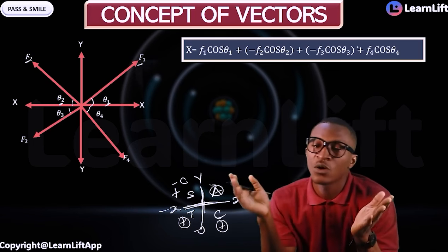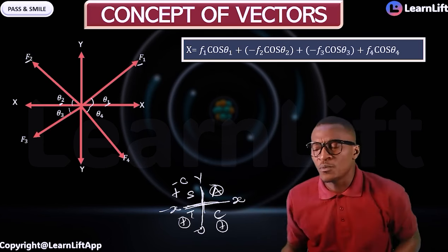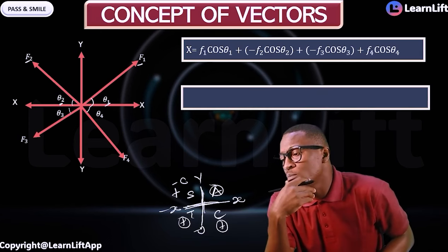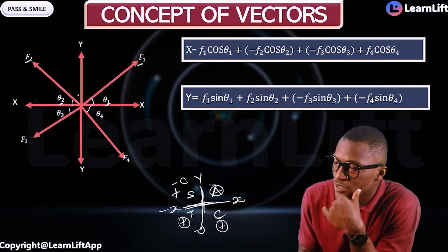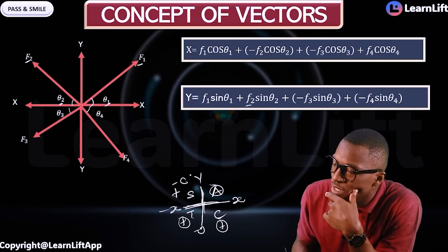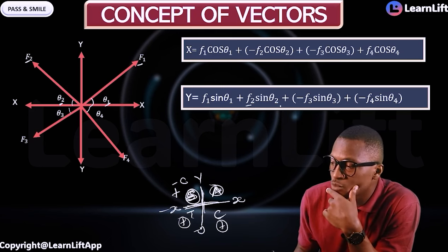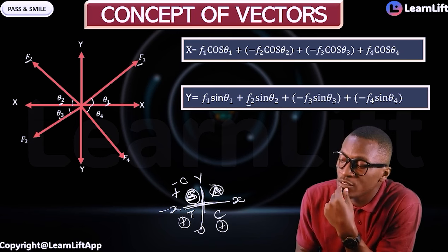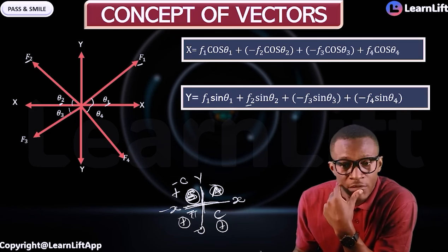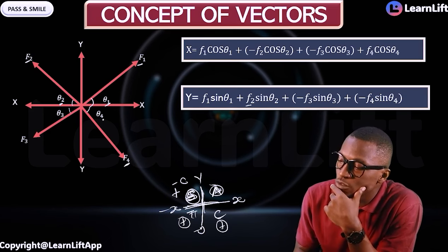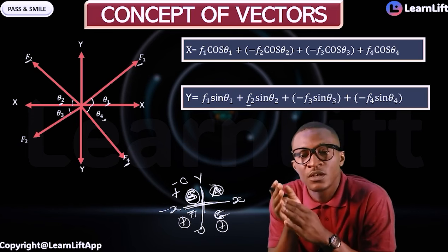Now for the vertical component, which becomes your Fy: F1 sin θ1 is positive in the first quadrant. In the second quadrant, sine is positive, so plus F2 sin θ2. In the third quadrant, sine is negative, so minus F3 sin θ3. In the fourth quadrant, sine is negative, so minus F4 sin θ4.